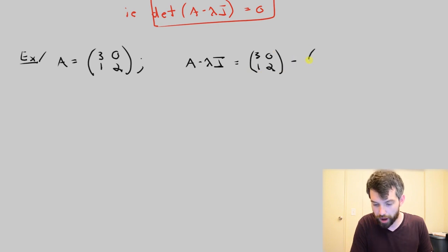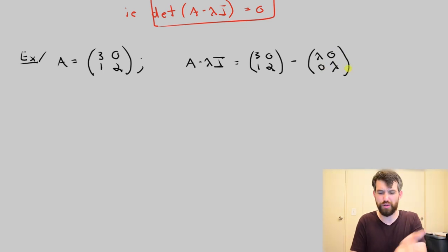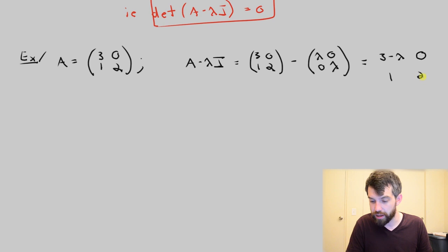And then I subtract off lambda, 0, 0, lambda. We don't even usually write down this intermediate step. We just go right for our goal which is 3 minus lambda, 0, 1, 2 minus lambda. So there we go. We have that matrix.